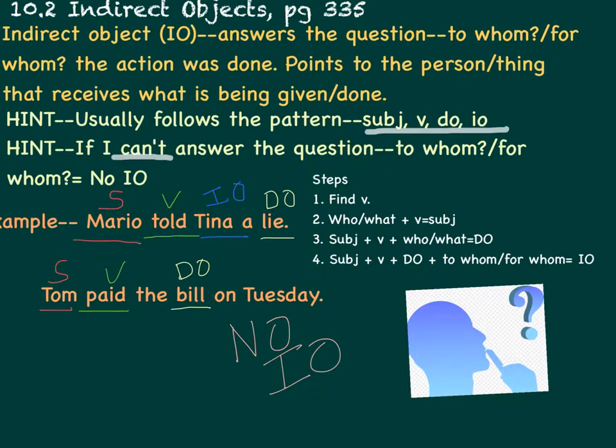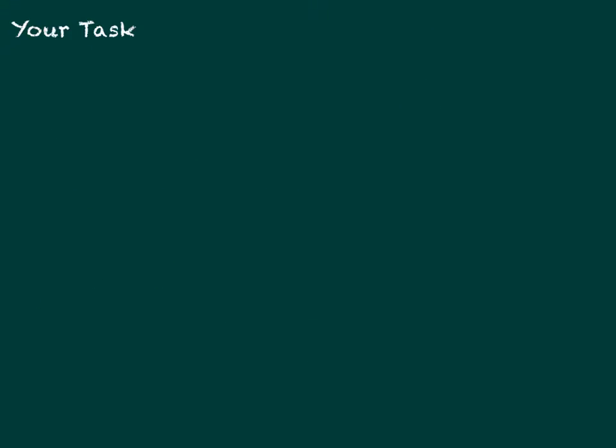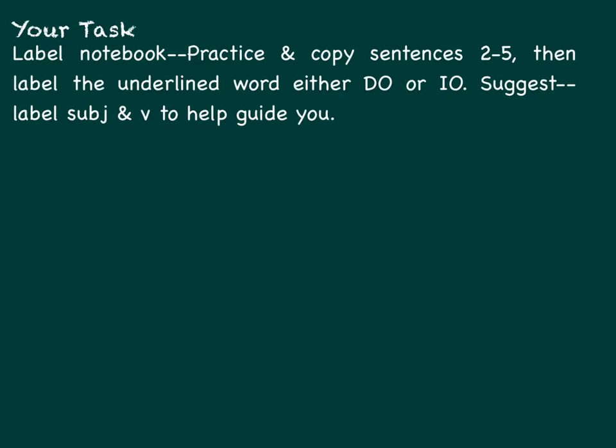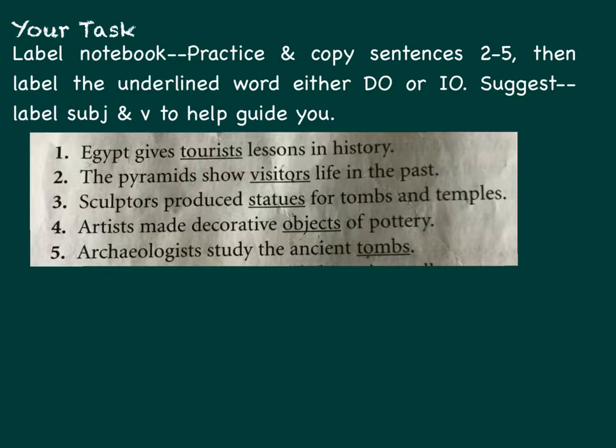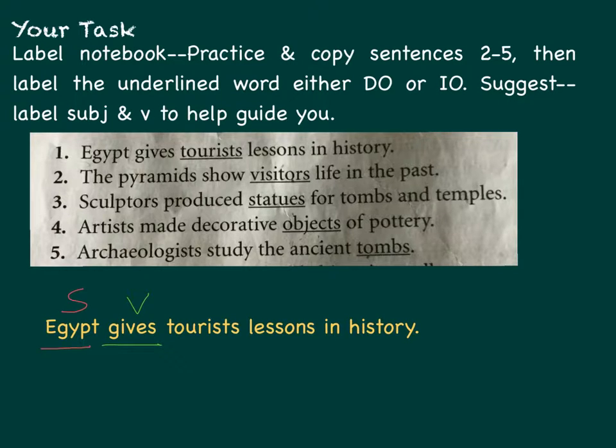Pause the video to jot down your notes, definitions, hints, examples, and steps. Your task is to label your notebook Practice and then copy sentences two through five. Identify the underlined word as either a direct object or indirect object. If it helps to identify the verb and subject, please do so. Number one has been done for you.